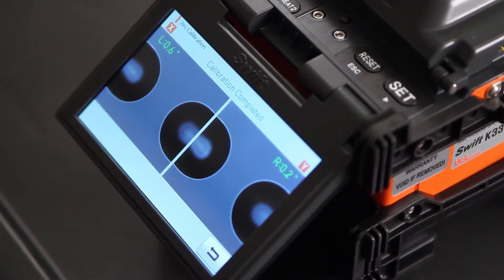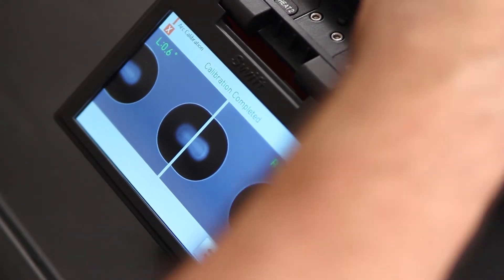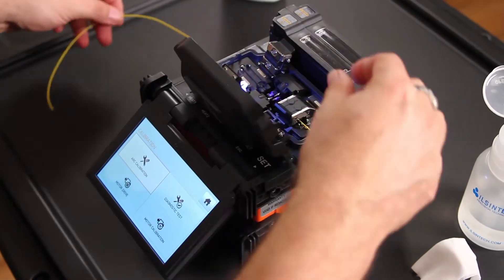Once your arc calibration is complete, open your wind cover and remove your fiber.